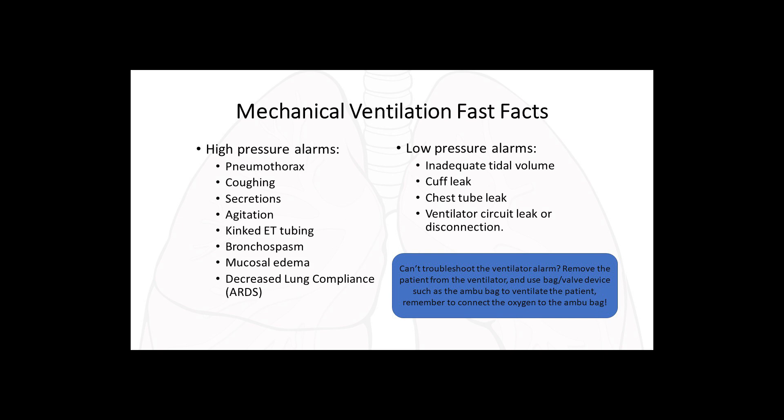Ventilator alarms: high pressure alarms can result from pneumothorax, coughing, excess secretions in the airway, patient agitation, kinked ET tubing, bronchospasm, mucosal edema, and decreased lung compliance such as ARDS or pulmonary fibrosis. Low pressure alarms can result from inadequate tidal volume, a cuff leak, a chest tube leak, or a ventilator circuit leak or disconnection. If you cannot troubleshoot a ventilator alarm, remove the patient from the ventilator and use a bag valve device such as an Ambu bag to ventilate the patient — and remember to connect oxygen to the Ambu bag.